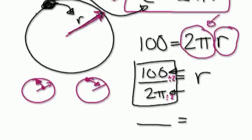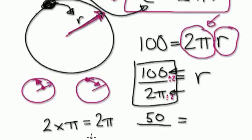So here, 100 divided by 2 is 50. And then, you know, 2 times pi equals 2π. Well, if you have 2π, and then you divide it by 2, that gives you π.